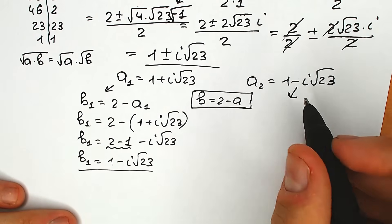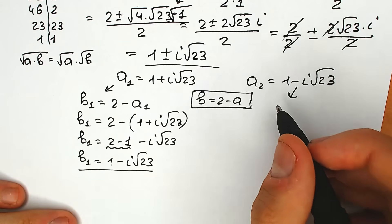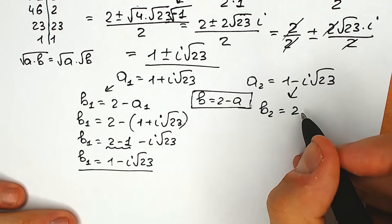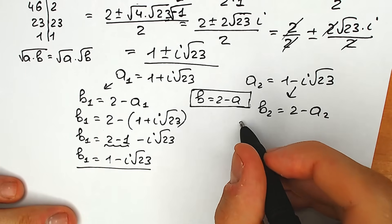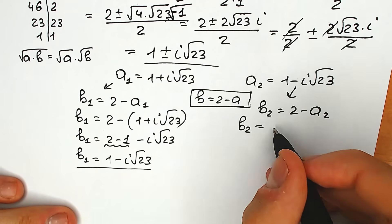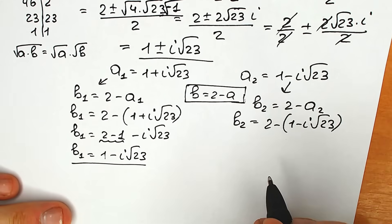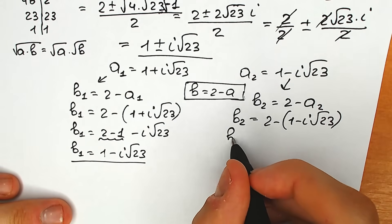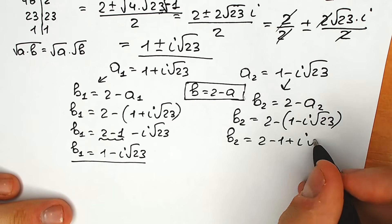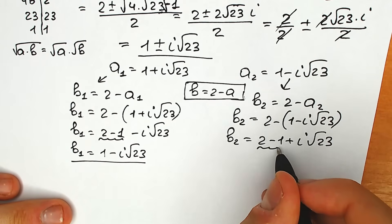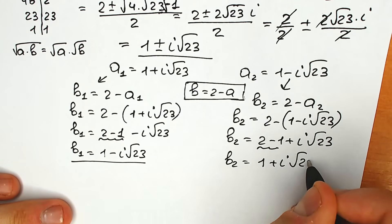With the same principle, let's find b₂. So b₂ equals 2 minus a₂, which gives 2 minus (1 minus i√23), equal to 2 minus 1 plus i√23. Therefore b₂ equals 1 plus i√23.